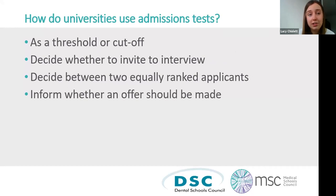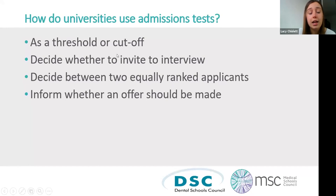Medical and dental schools use admissions tests in a variety of different ways. They might use UCAT or BMAT as a threshold or cutoff score to select applicants, use results to decide whether to invite you to interview, or use them to inform whether an offer should be made. They may also use them to decide between two equally ranked applicants. All this information is on each university's website explaining how they individually use it.